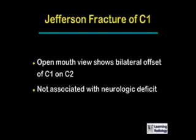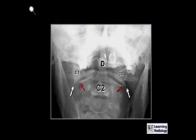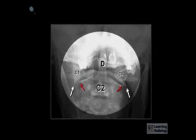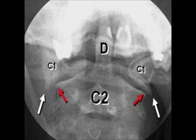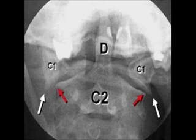Jefferson fractures are usually not associated with neurologic deficits because the body of C1 actually becomes wider and allows for more space for the spinal cord. This is an example of a Jefferson fracture seen on an open mouth view. You can see that the lateral masses of C1, indicated by the two white arrows, clearly lie lateral to the edges of the lateral masses of C2, indicated by the red arrows.